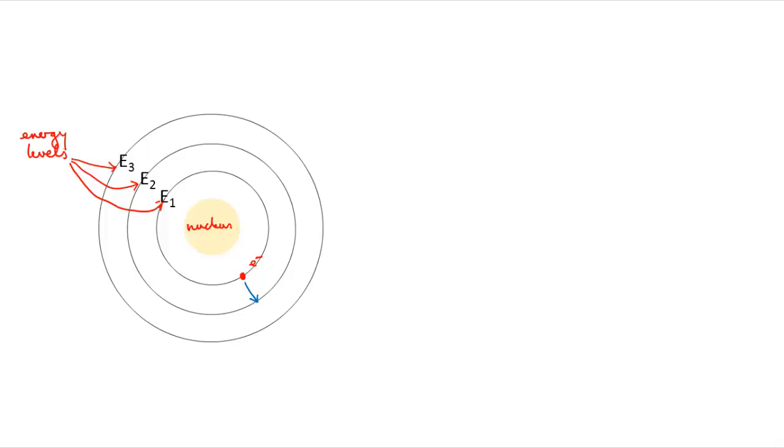So where does the electron get the energy from, this precise amount of energy? Well, it absorbs a photon that has exactly the right wavelength to give it the exact quantum of energy that it needs to jump up a level.